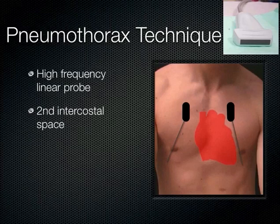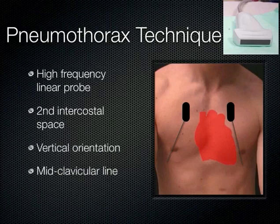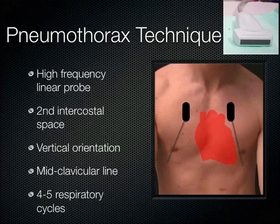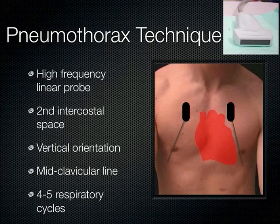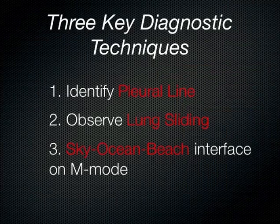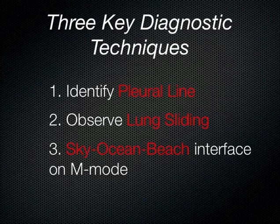When you place the probe, watch the patient breathe through several respiratory cycles — you're trying to pick up whether the pleura is moving. In a normal patient the visceral and parietal pleura are together, and there's motion at that interface when breathing. If the lung has collapsed, there won't be any motion at that interface. Three things to look for: the pleural line, lung sliding, and when you put the M-mode line through the pleural line, you can watch over respiratory cycles whether the lung is moving underneath.